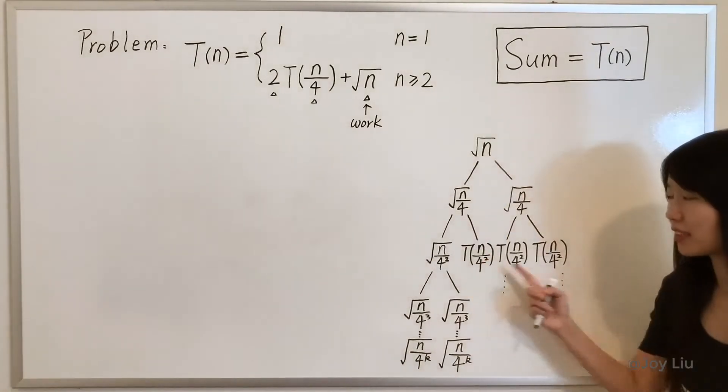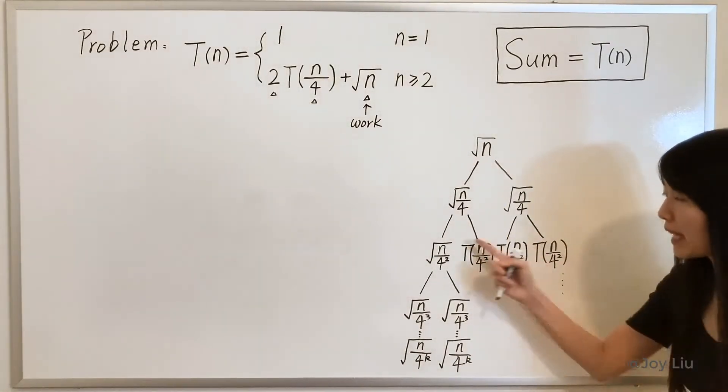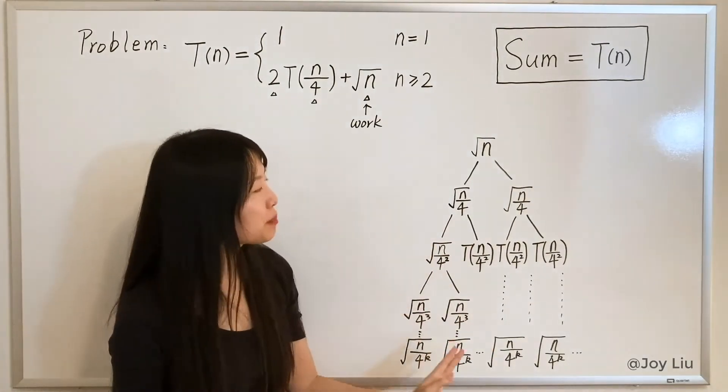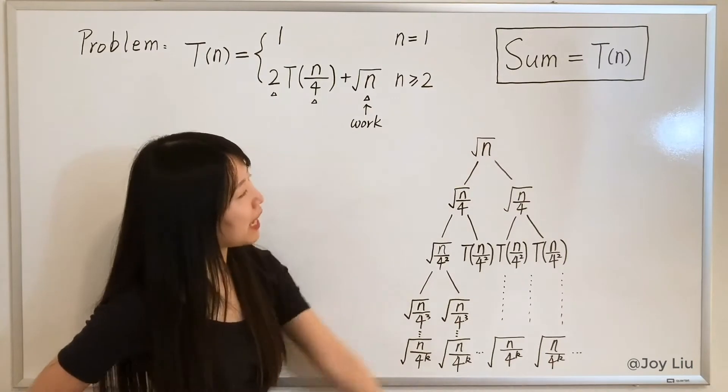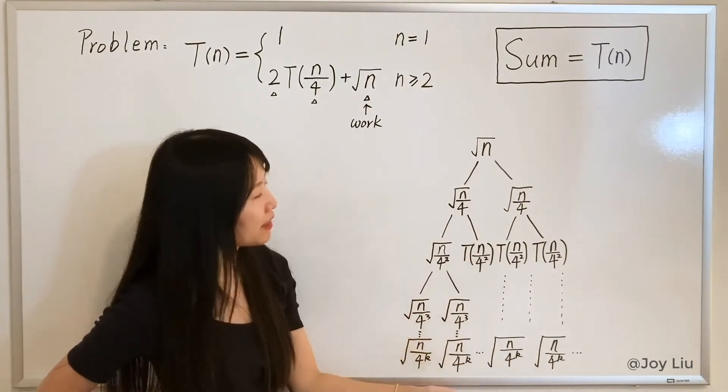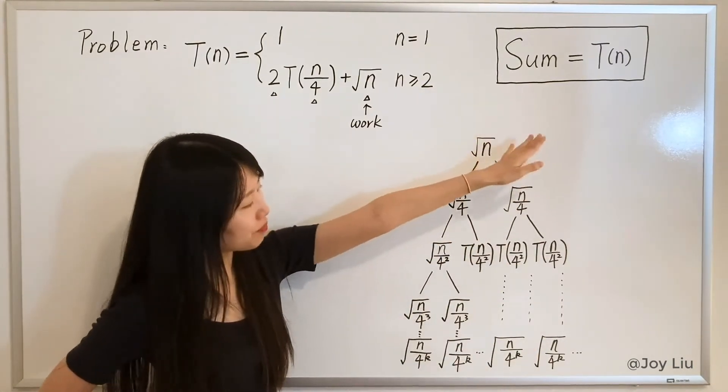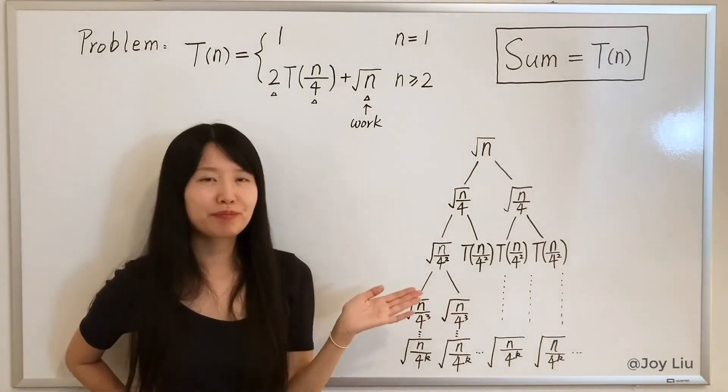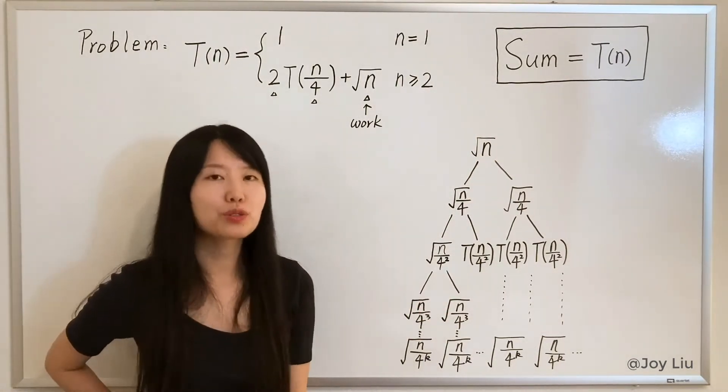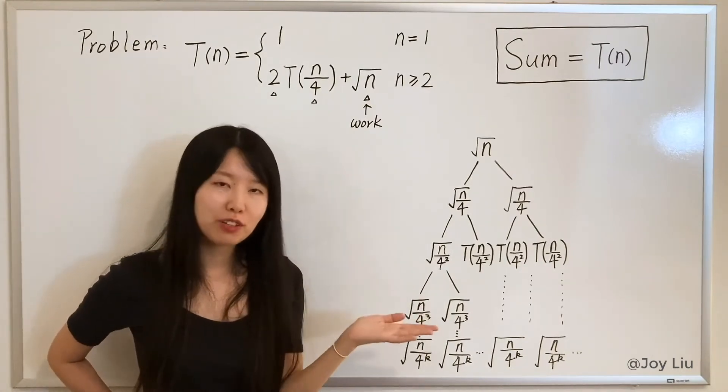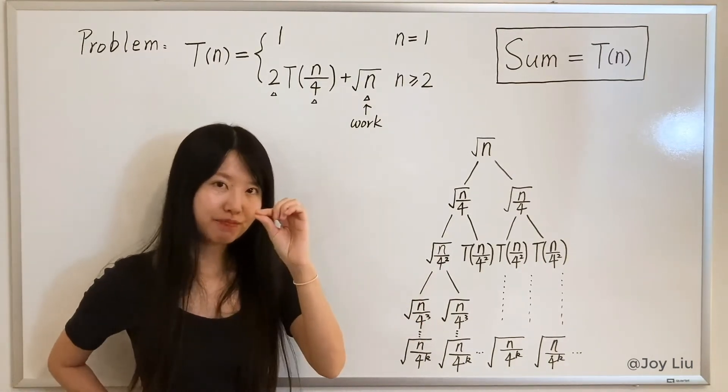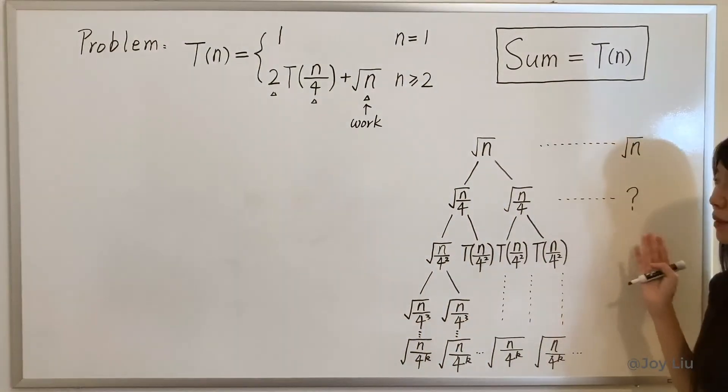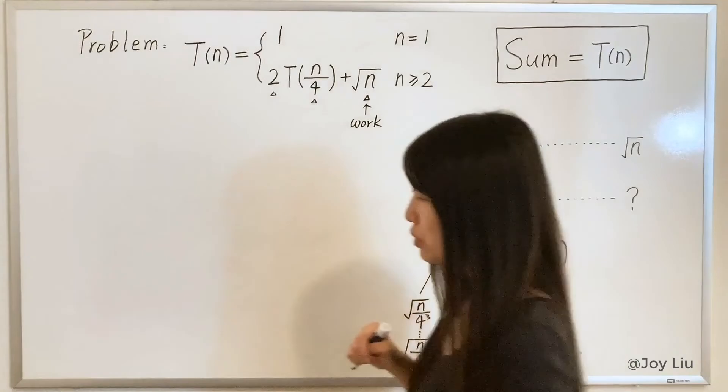I don't expand these things because these are totally the same as this subtree. So we developed this tree based on the rule, so if you add everything in this tree together there will be T(n) exactly. So how to calculate the sum? One way is to calculate the sum of each level and add them up together. So what is the sum of this level? Very smart, square root of n. What's the sum of this level?